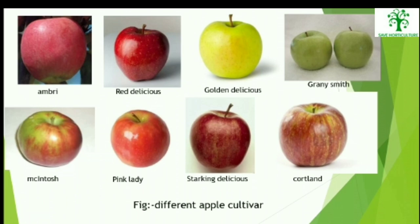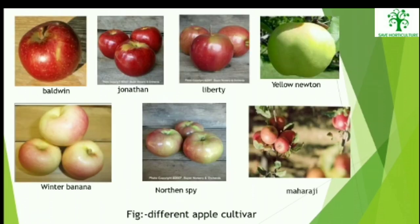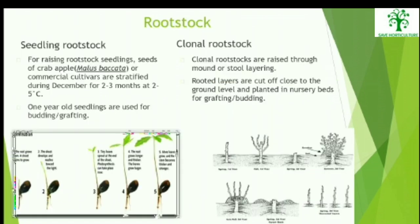Various other varieties of apple grown all over the globe include Ambri, Red Delicious, Golden Delicious, Granny Smith, McIntosh, Pink Lady, Starking Delicious, Cortland, Baldwin, Jonathan, Liberty, Yellow Newton, Winter Banana, Northern Spy, and Maharaji.